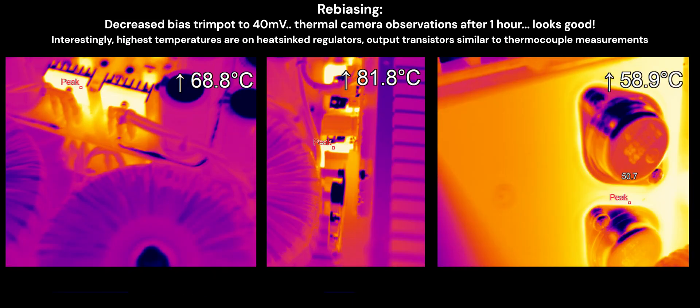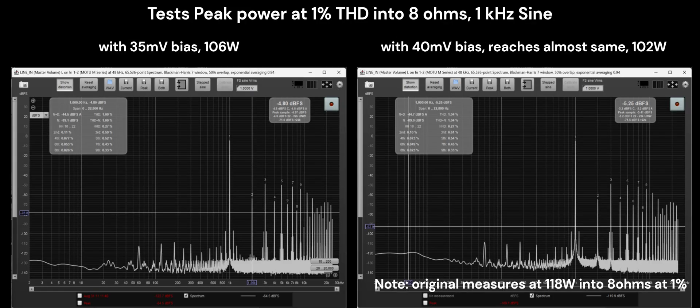Interestingly, the highest temperatures were actually located on some of the regulator transistors. The lower bias brought the maximum output power to within a comparable range of the original design at 1% distortion.